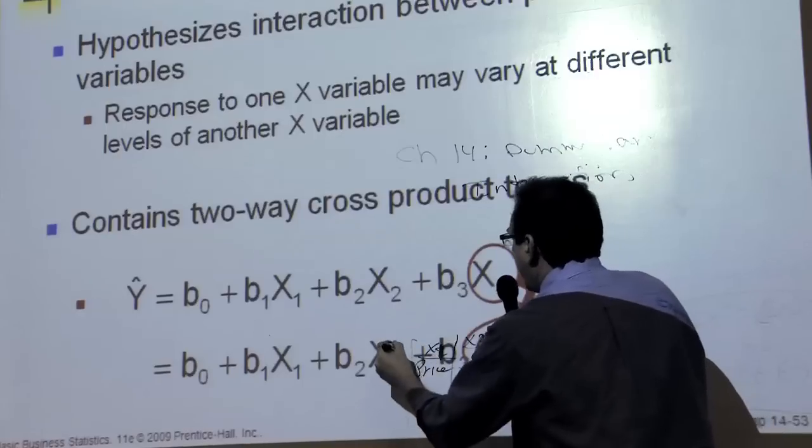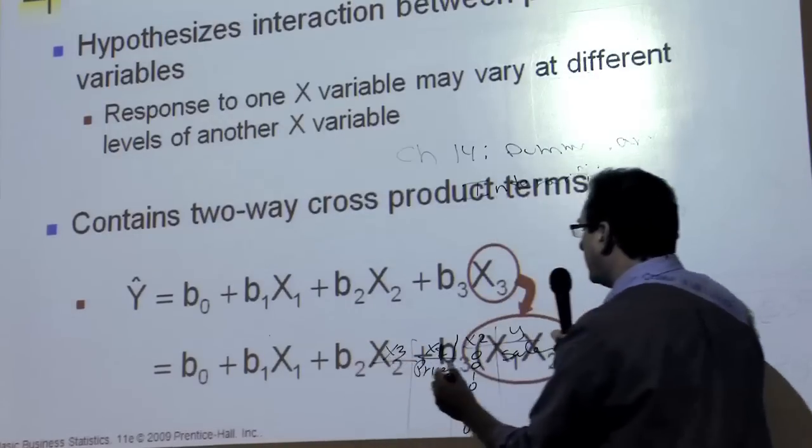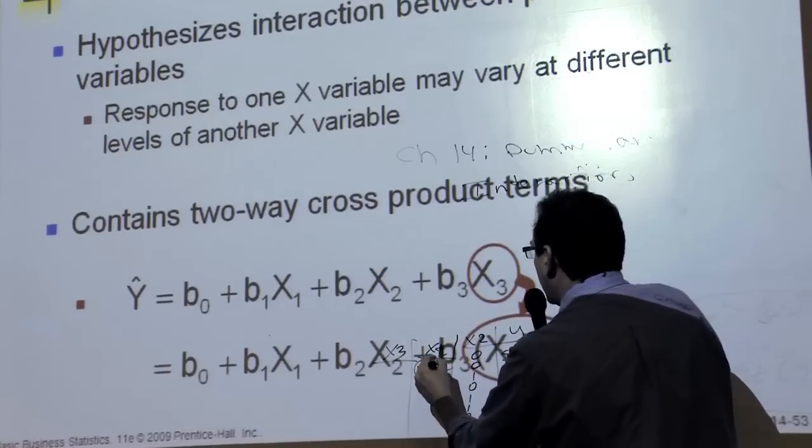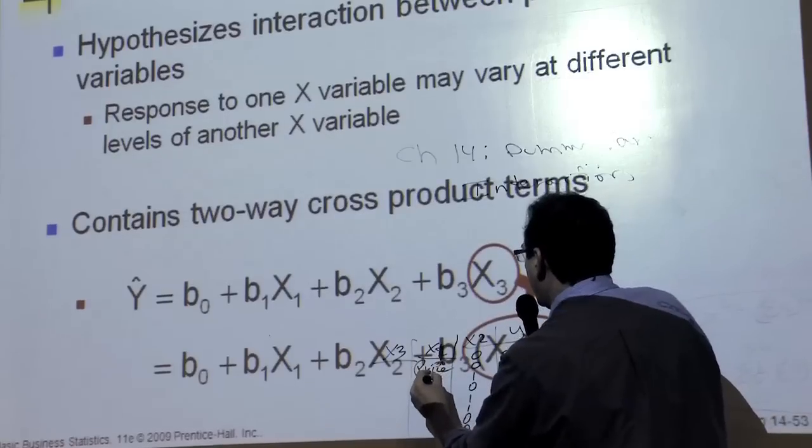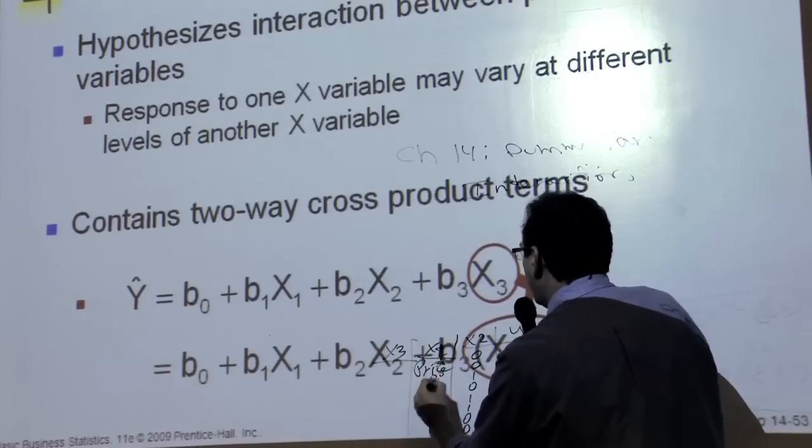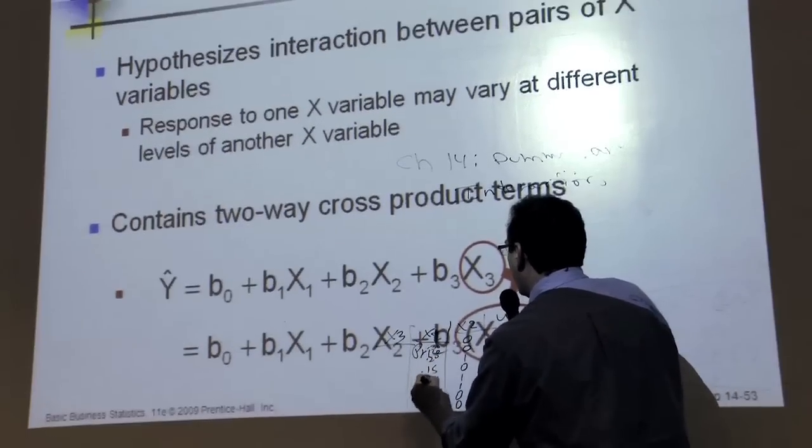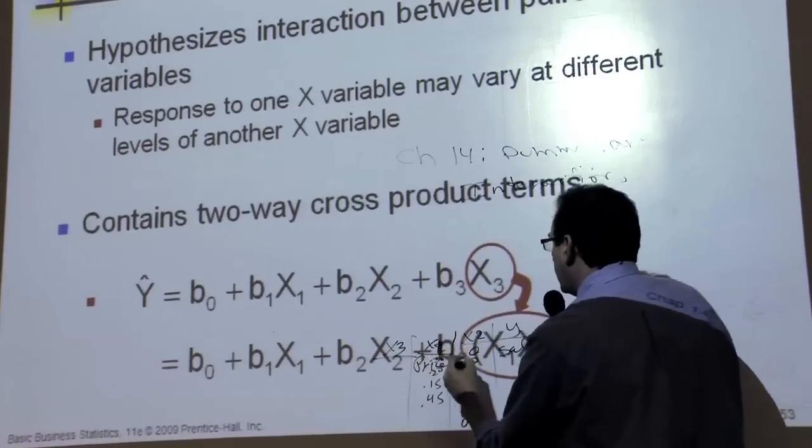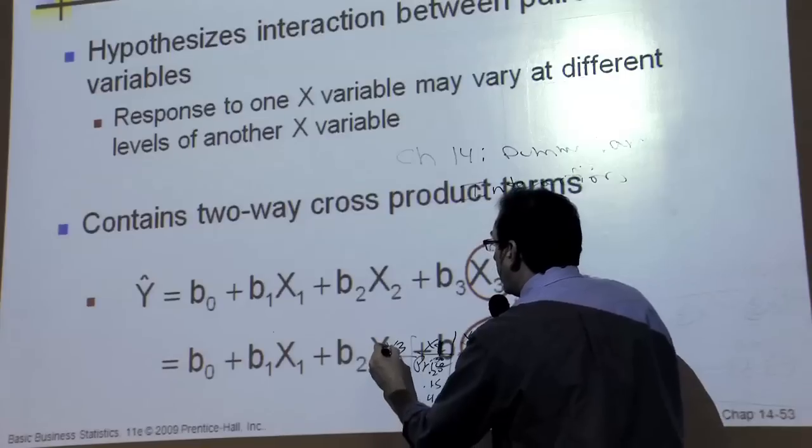So in fact, you would create an x3 column, I don't know if this is legible, if this is the price was $0.30, and $0.20, and $0.15, and $0.45, you would multiply this times this, and this times this, and this times this, to create the x3 column.